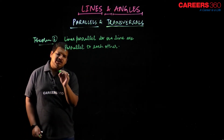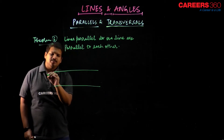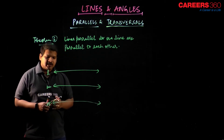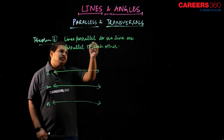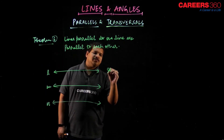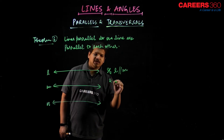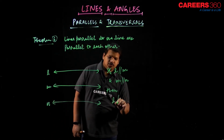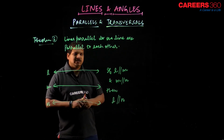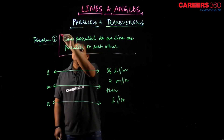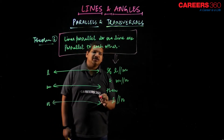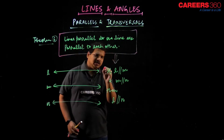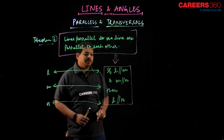What does this theorem mean? For example, we have line L, line M, and line N. According to this theorem, what is given is: if L is parallel to M and M is parallel to N, then L should be parallel to N. Let us look at a short proof of this theorem.